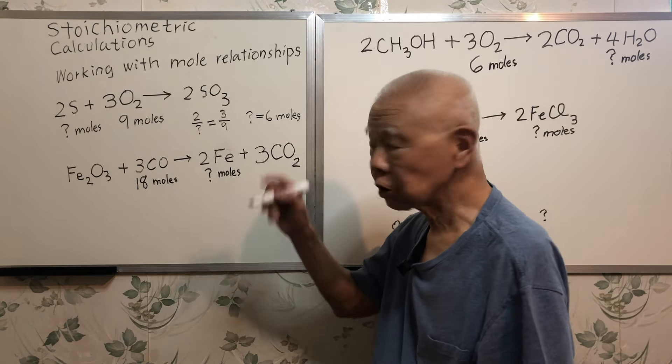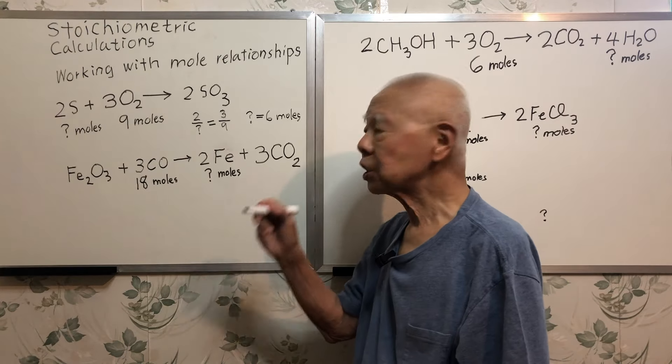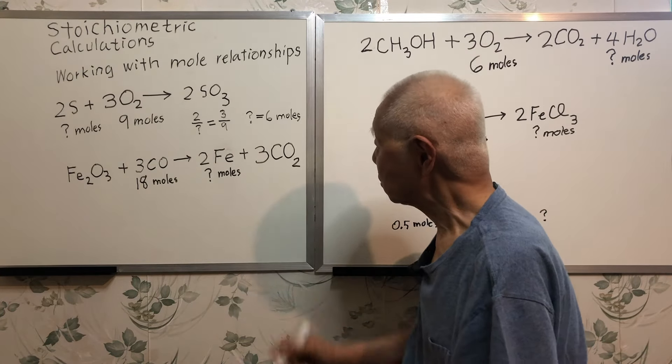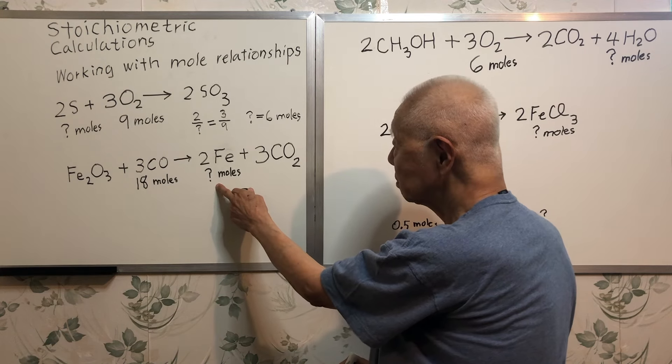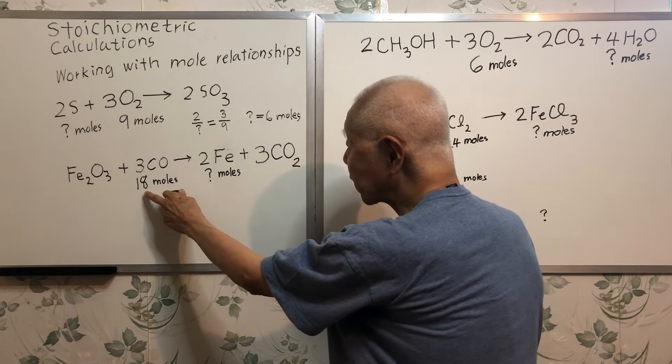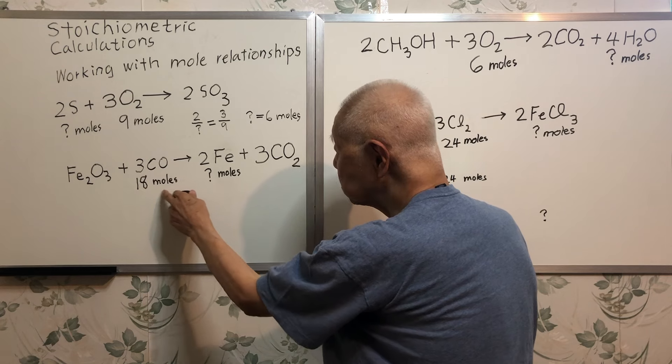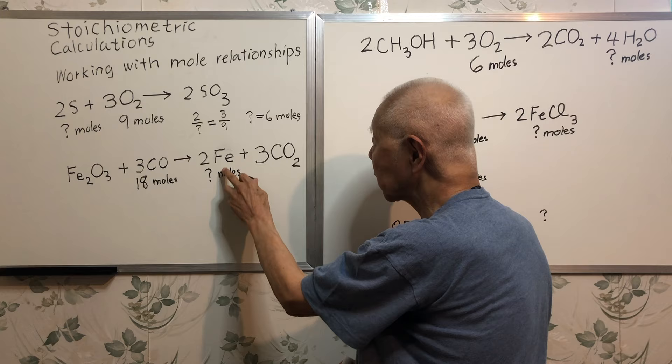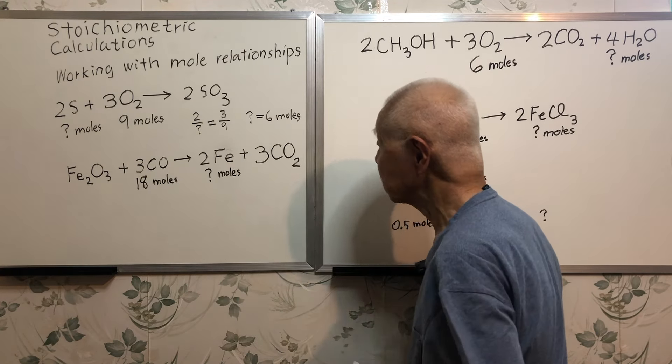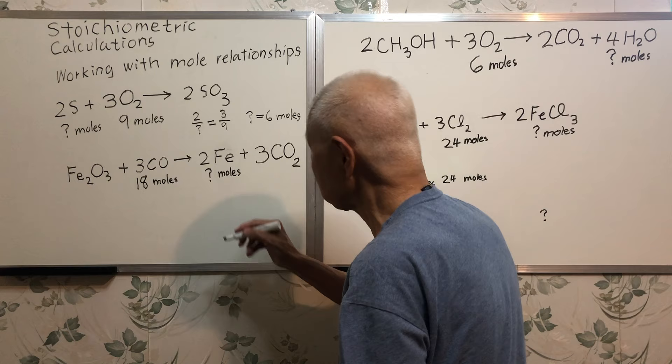Once you know the principle, it's a ratio problem. It's so easy for the next one now. What is the question mark? If I am given 18 moles of carbon monoxide, how many moles can I obtain for the iron metal?